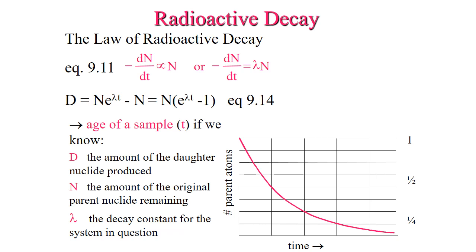Radioactive decay is constant for each element, and the law of radioactive decay dictates this constant. How long it takes for one half of a given volume to decay to the stable daughter product is called the half-life. The amount of daughter product to parent product over time is related by Equation 9.14. As long as we know the amount of daughter product and the remaining parent product, we can calculate the time. Half-lives are consistent and constant for each element — we refer to this as the decay constant.